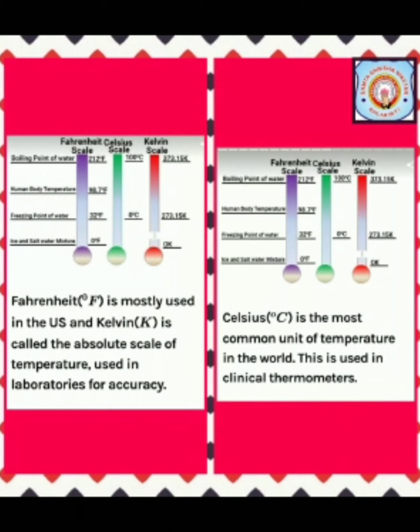Fahrenheit is mostly used in the US. Kelvin is called the absolute temperature scale of a specific object, and is used whenever we measure temperature specially in a lab. Celsius is the most common unit of temperature in the world and is used in clinical thermometers.